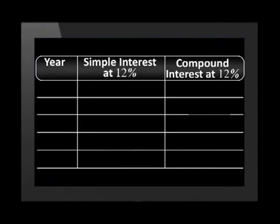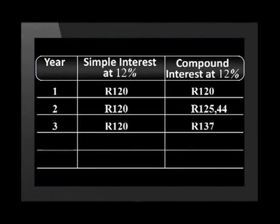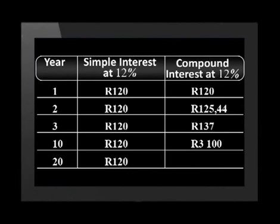Have a look at this table and let's compare how much interest we are earning each year with the money in the bank. Next to year 1: simple interest at 12% gives R120, and compound interest at 12% also gives R120. Now on to years 2 and 3, then year 10, then year 20. Next to year 20: simple interest at 12% gives R120, and compound interest at 12% gives R9,630.